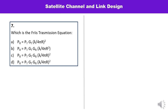Question number 7: which is the Friis transmission equation? The Friis transmission equation gives power received as PR = PT·GT·GR·(λ/4πr)². It relates the power received with the power transmitted along with the gain of the transmitting and receiving antennas, with the distance between satellite and earth station as a major factor. So C is the correct option.